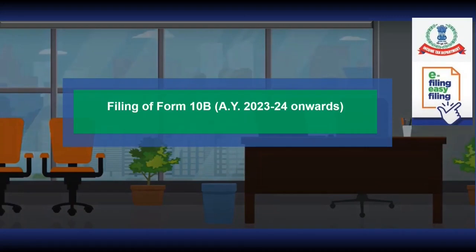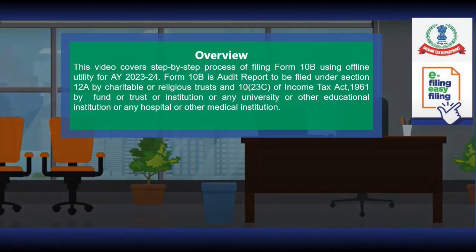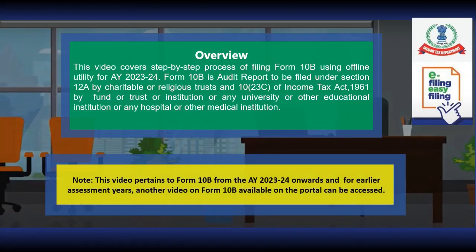This video is on filing of Form 10B for Assessment Year 2023-24 onwards. Form 10B is the audit report which is required to be filed under Section 12A by charitable or religious trusts, and under Section 10(23C) by funds, trusts, institutions, universities, other educational institutions, hospitals, or other medical institutions to claim exemption under the Income Tax Act.